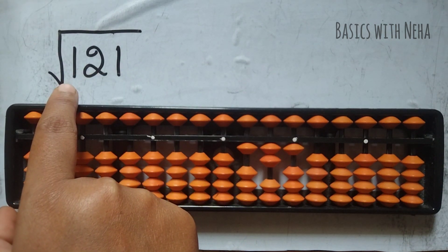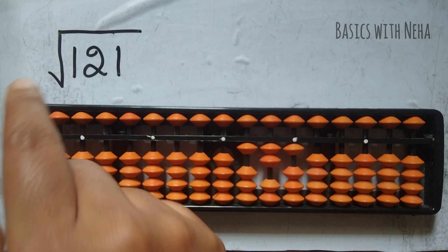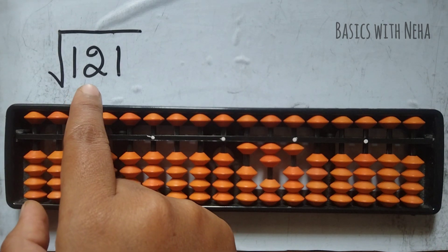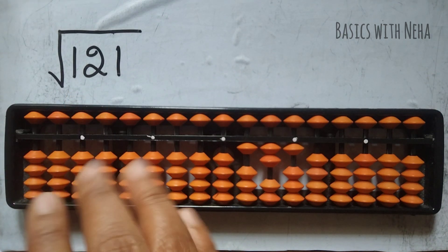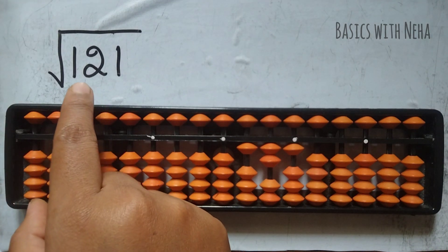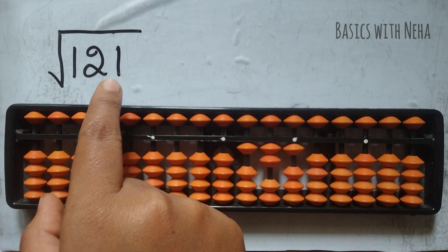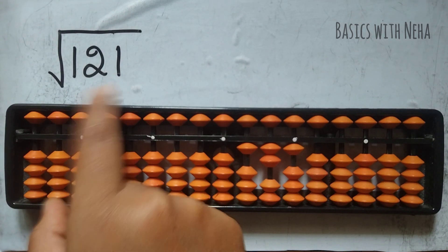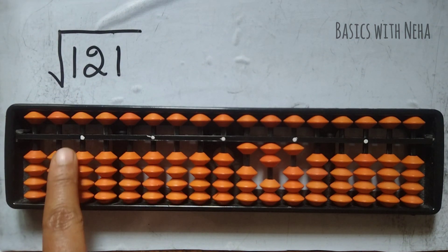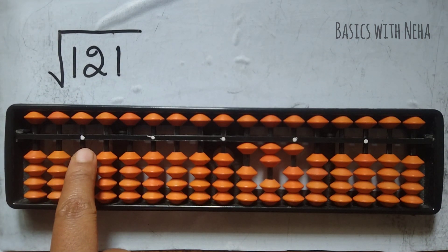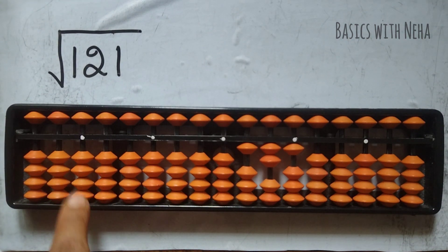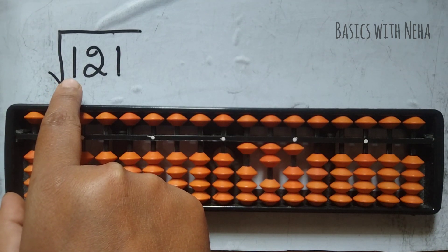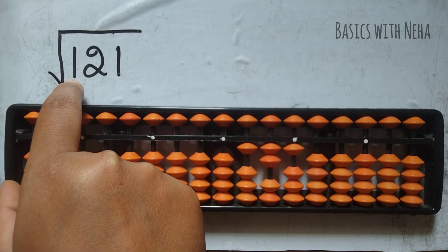One is another group. The number of groups will tell us how many numbers will be there in the answer part. We have two groups, so there will be two numbers in the answer. I'll start my answer from here, considering this to be the ones place.